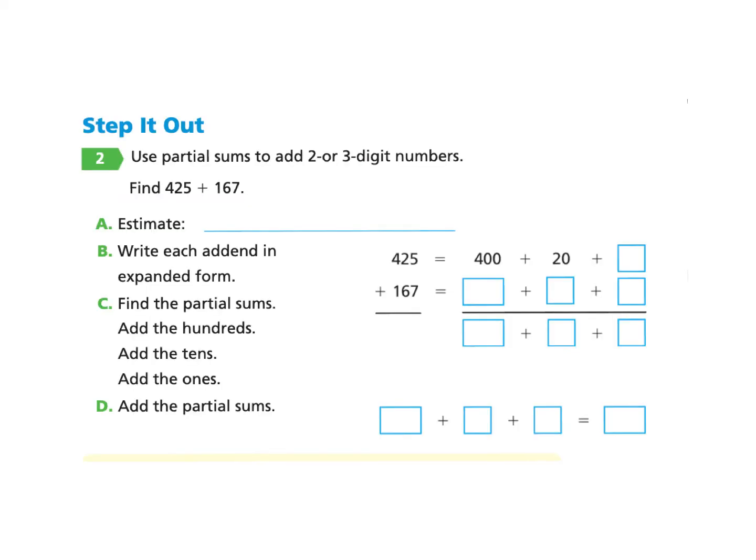Now let's take a look at the next page, 271 under Step It Out Part 2. Use partial sums to add two or three digit numbers. Find 425 plus 167.